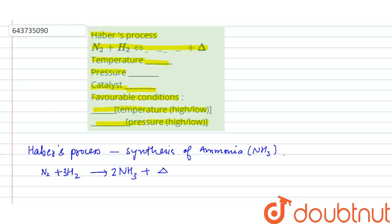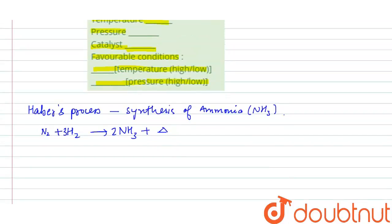So according to the Le Chatelier principle, ammonia will be favored by high pressure, high pressure of about 200 and 400 atmospheres.